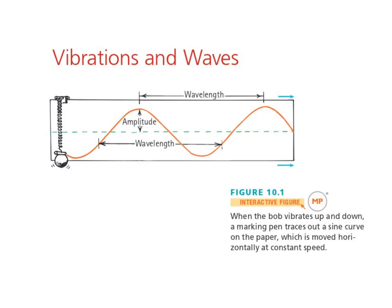The first thing that you should know is that waves are always very closely tied to vibrations. It's vibrating systems that create waves. Things that vibrate are necessary for waves to be created. So vibrations and waves are tied together.